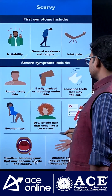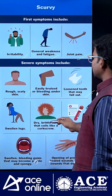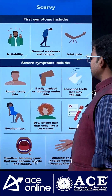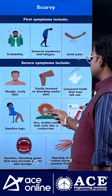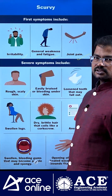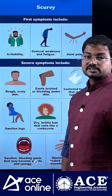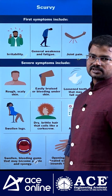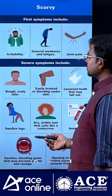Additional symptoms of scurvy include loosened teeth, swelling of the legs, anemia, and dry brittle hair with a coiled orientation. These are all considered symptoms of scurvy.